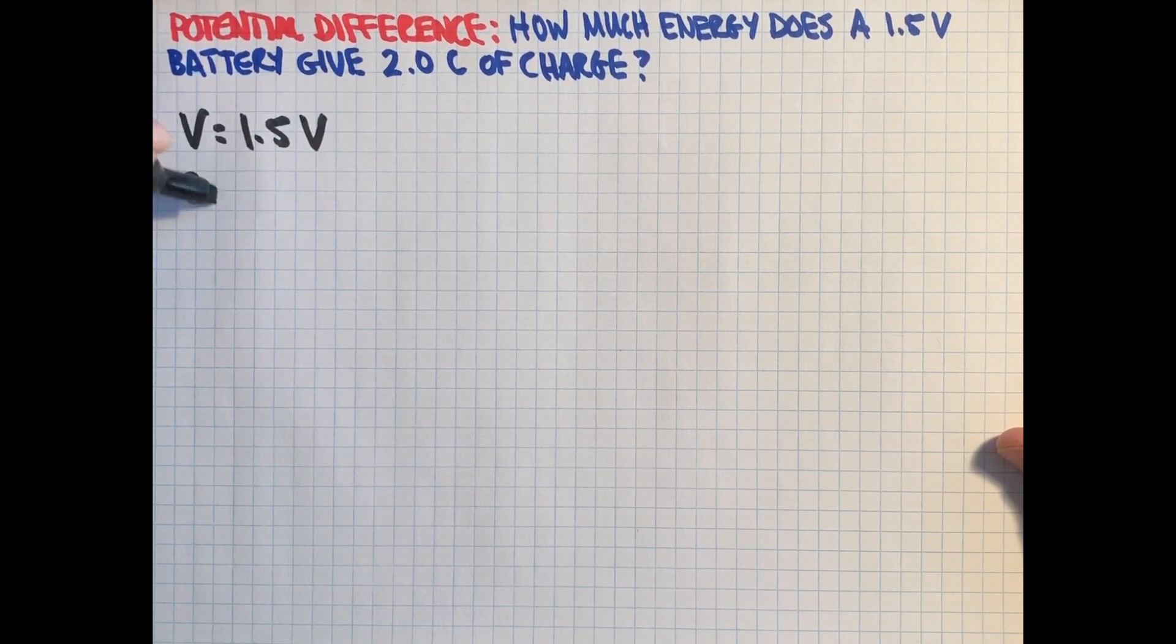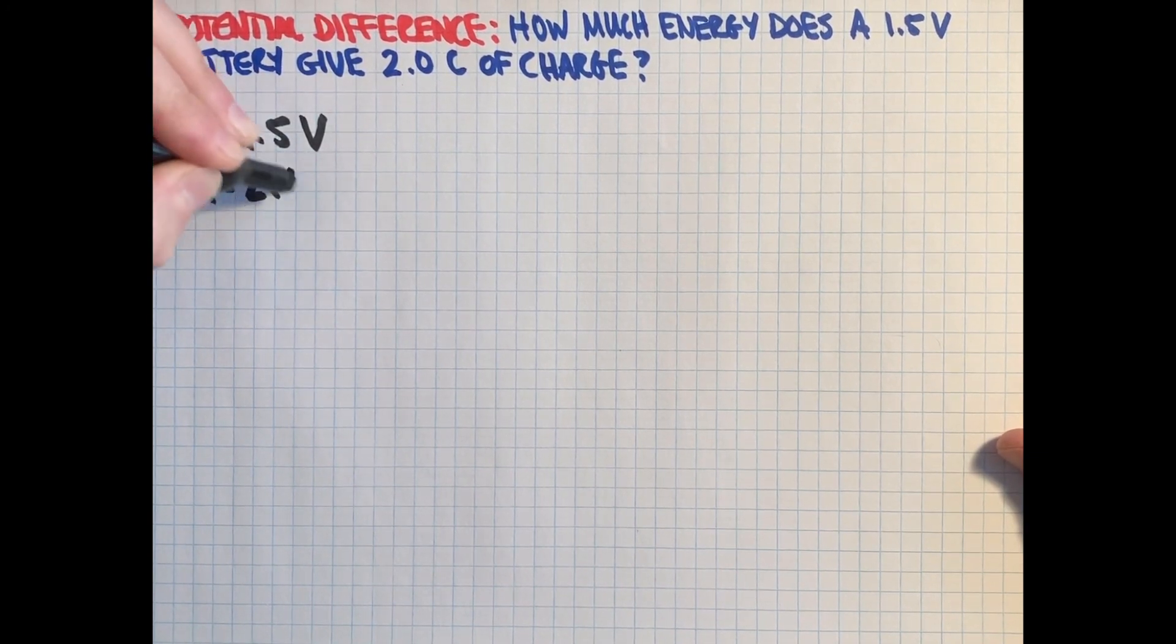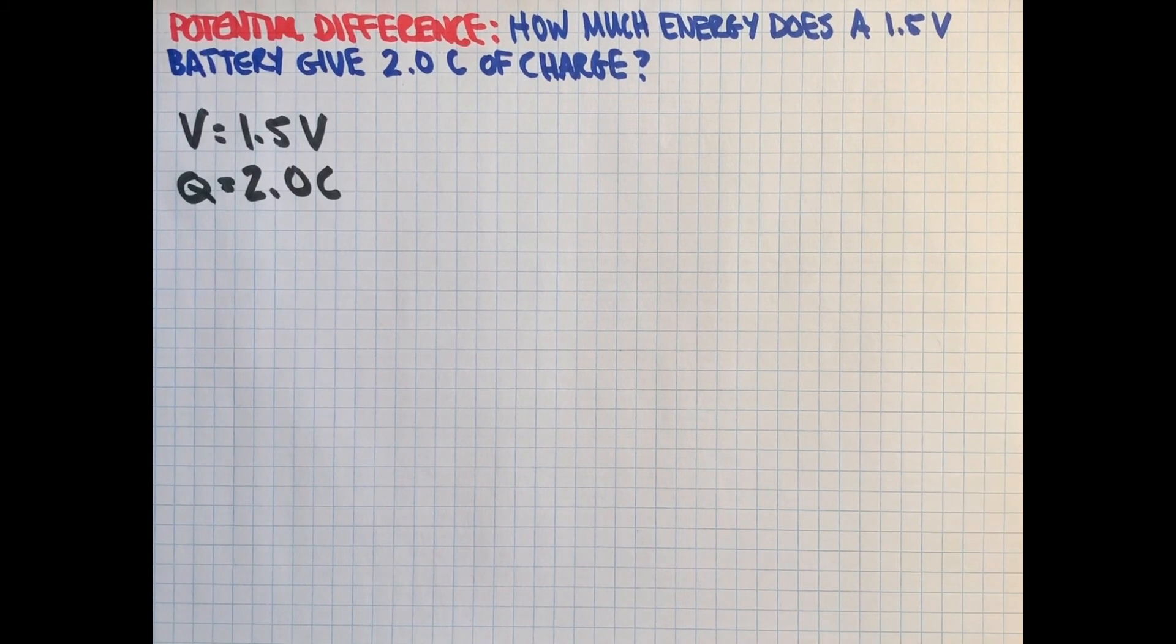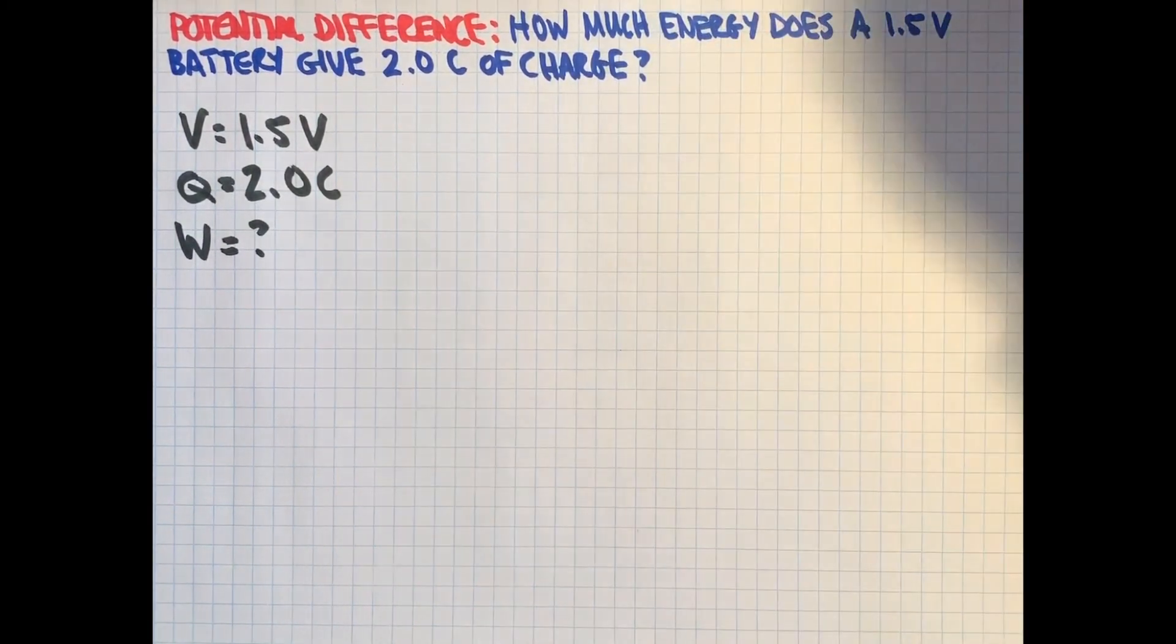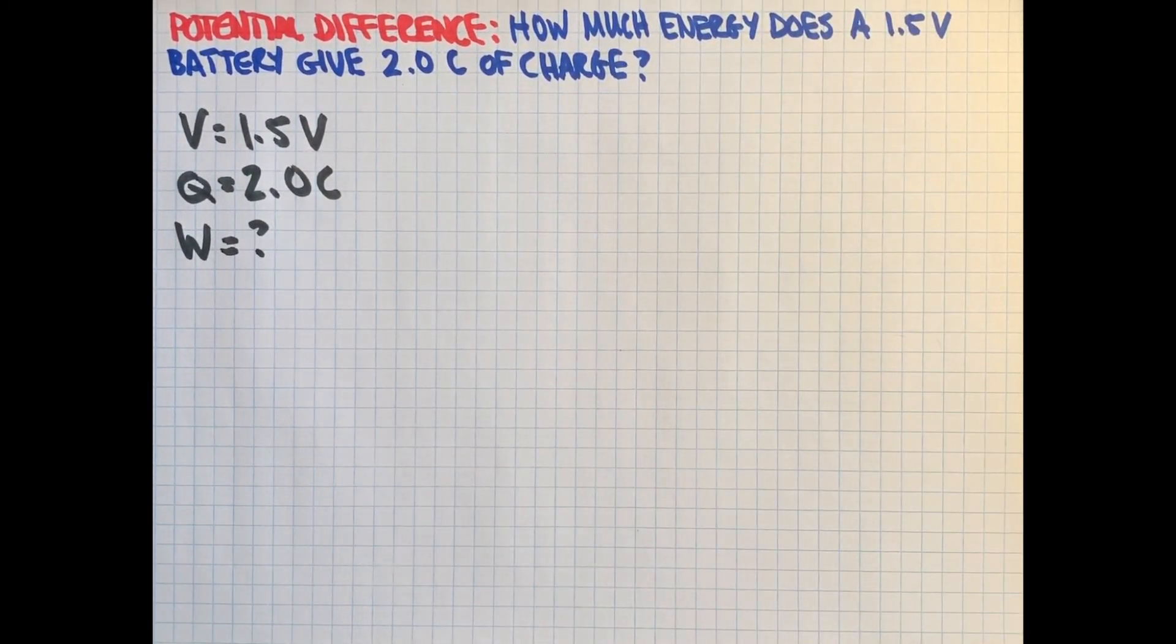We know the charge here, Q, is 2 coulombs as well. But we're looking for the energy or the work that 2 coulombs of charge could do when in a 1.5 volt potential difference. So note the name potential difference here.